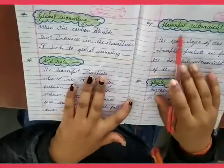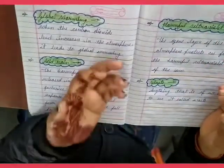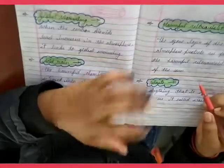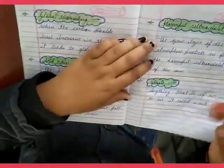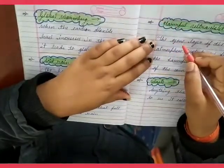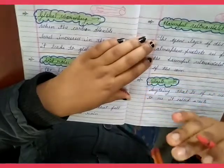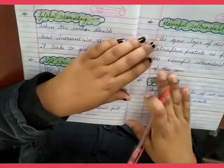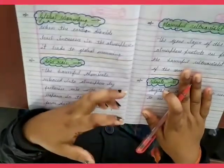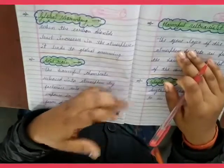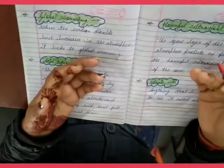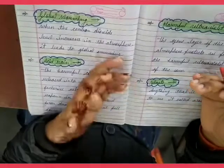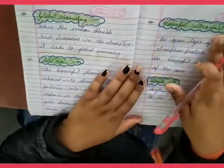What are harmful ultraviolet rays? The ozone layer of the atmosphere protects us from the harmful ultraviolet rays of the sun. The ozone layer keeps the harmful UV rays from reaching us. If the ozone layer is depleted and does not stop the harmful ultraviolet rays, they will cause skin disease and cancer.